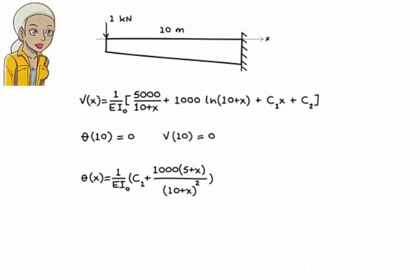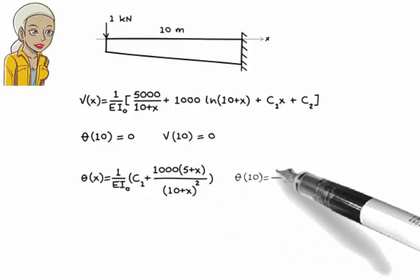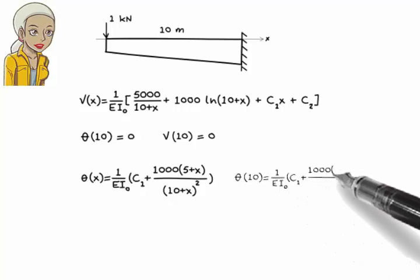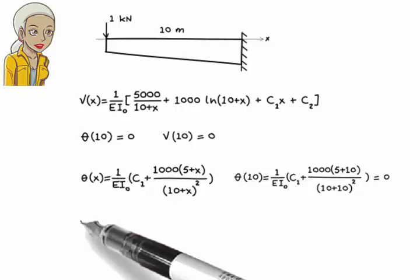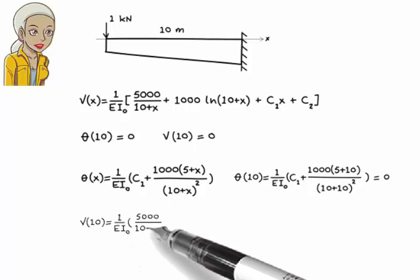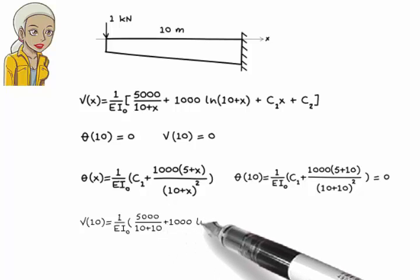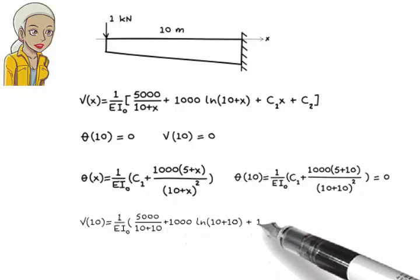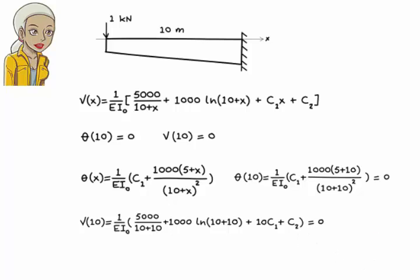So we can write the boundary conditions as shown. Solving these equations for c₁ and c₂, we get c₁ equals negative 75 over 2 and c₂ equals negative 2871.